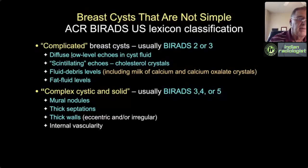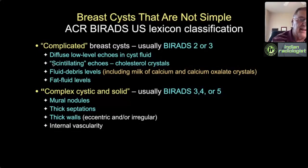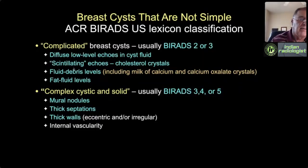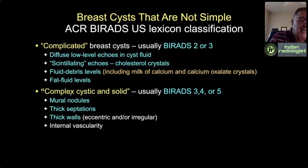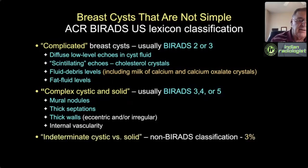What makes a cyst complicated? Echogenic fluid or echogenic debris within the fluid—diffuse low-level echoes, scintillating echoes which are mobile cholesterol crystals, debris levels created by proteinaceous debris layering in the dependent part, or non-dependent lipid layers floating anteriorly. All four can give rise to benign complicated cysts. A complex cystic and solid mass is usually BI-RADS 4 or 5. What causes that appearance? Mural nodules, thick septations, especially isoechoic septations, thick irregular walls, and I would add internal vascularity.